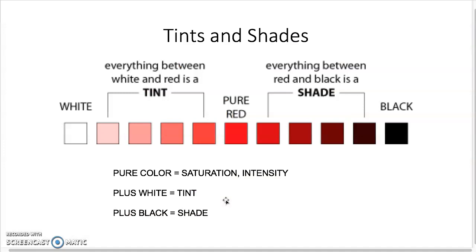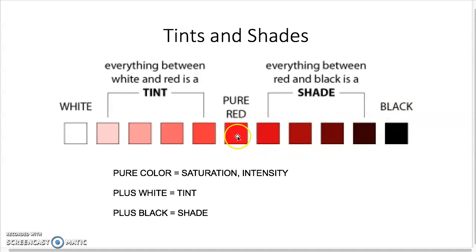For your 10-step color scale, start with your pure color, then add successive amounts of black on one side and successive amounts of white on the other. You'll quickly realize it takes just a tiny dab of white to make red go very light pink, and not much black to go very dark. Play carefully — add a little at a time — to create even transitions. This is an important part of understanding how to mix paint and understand color.